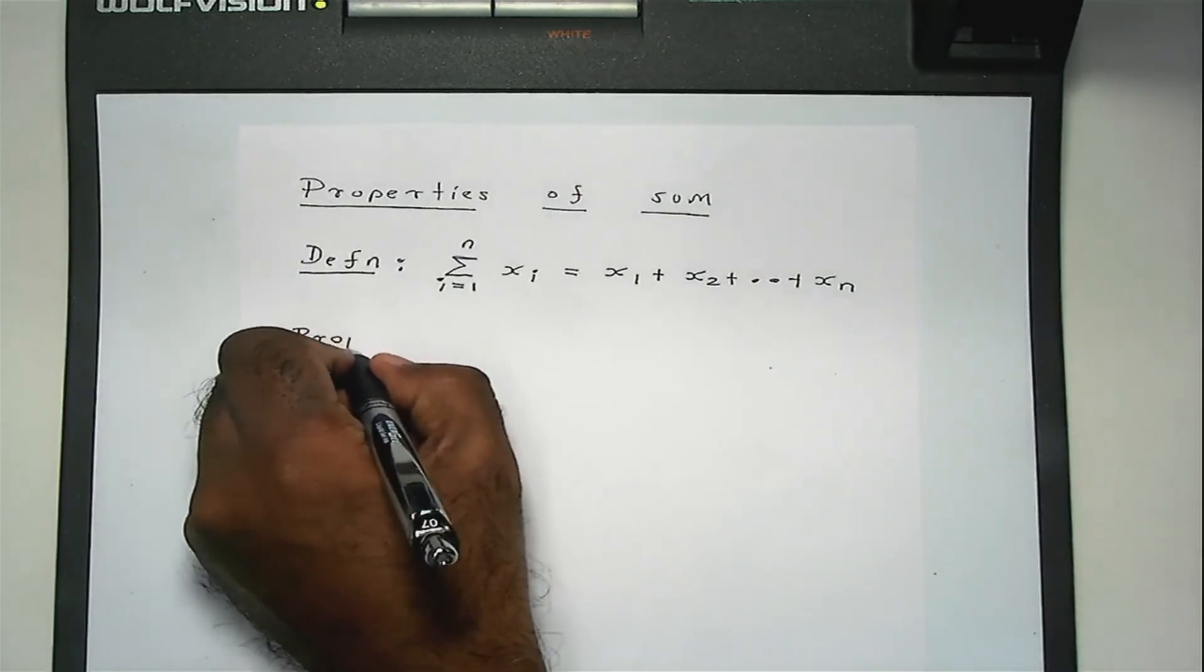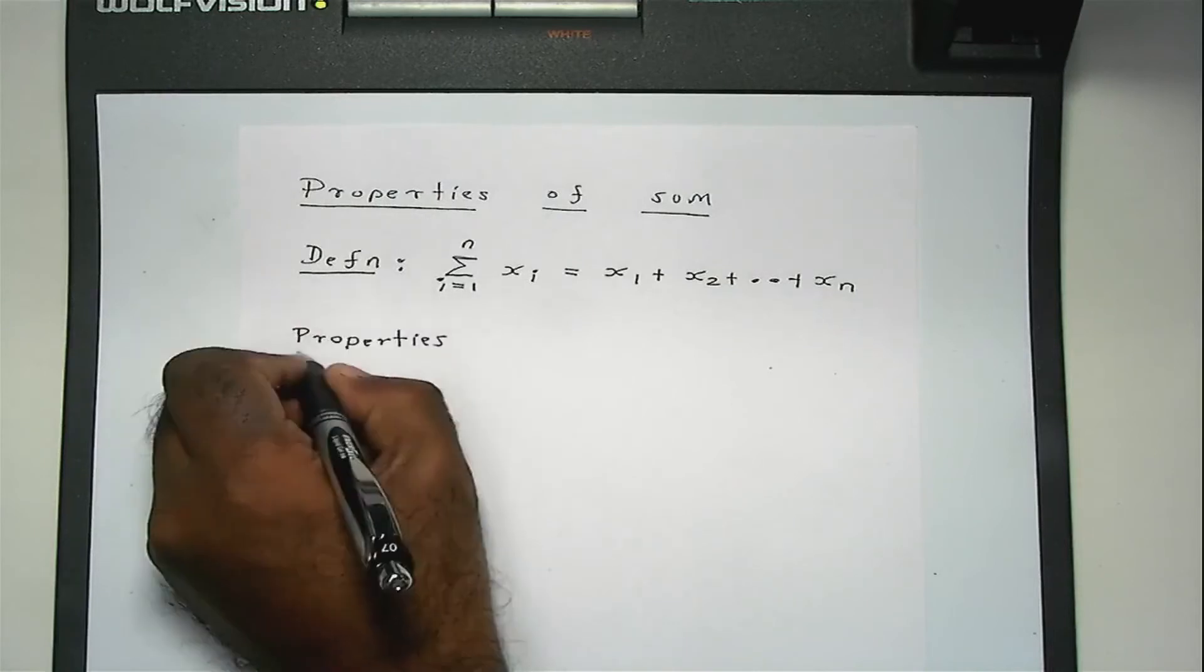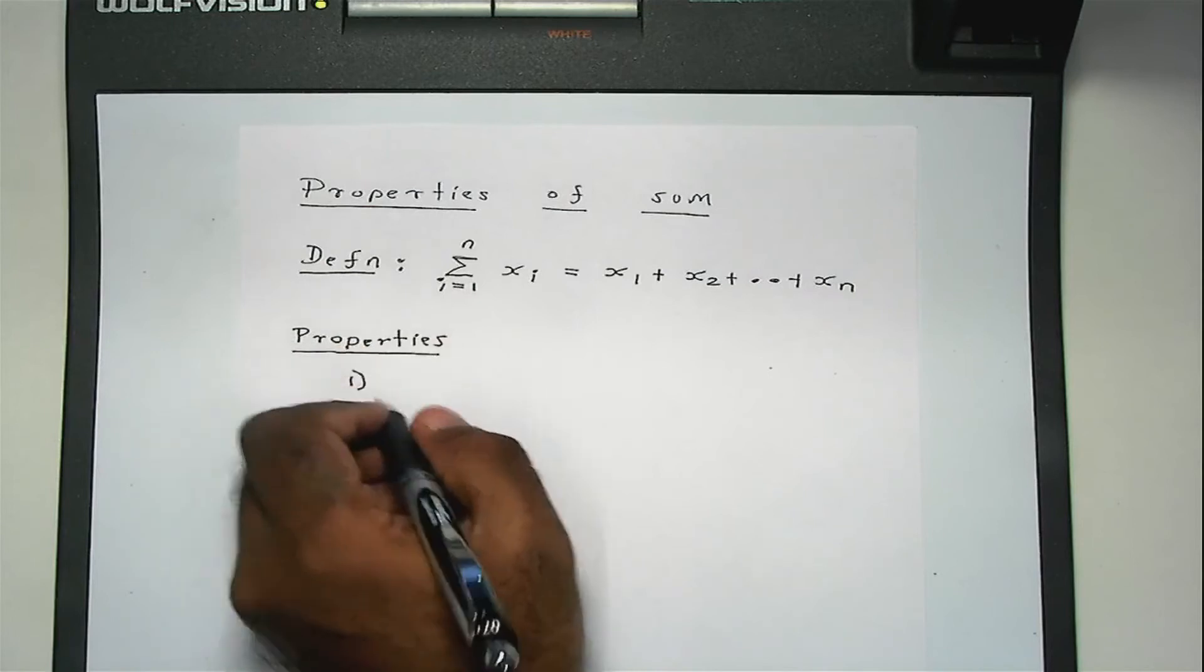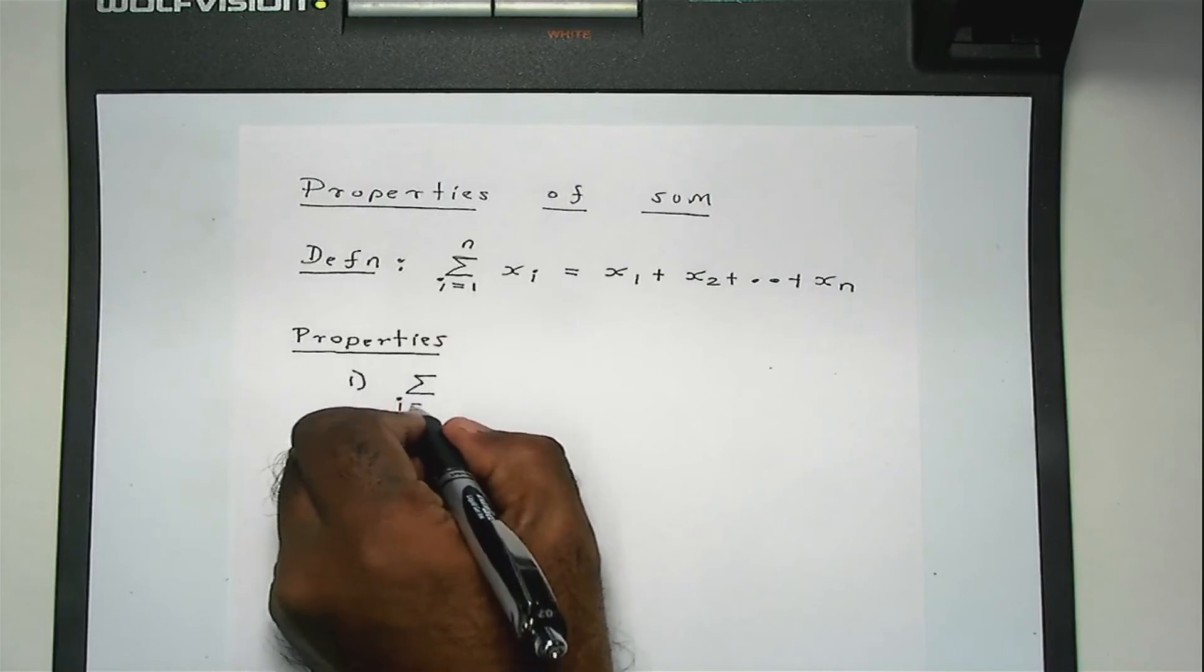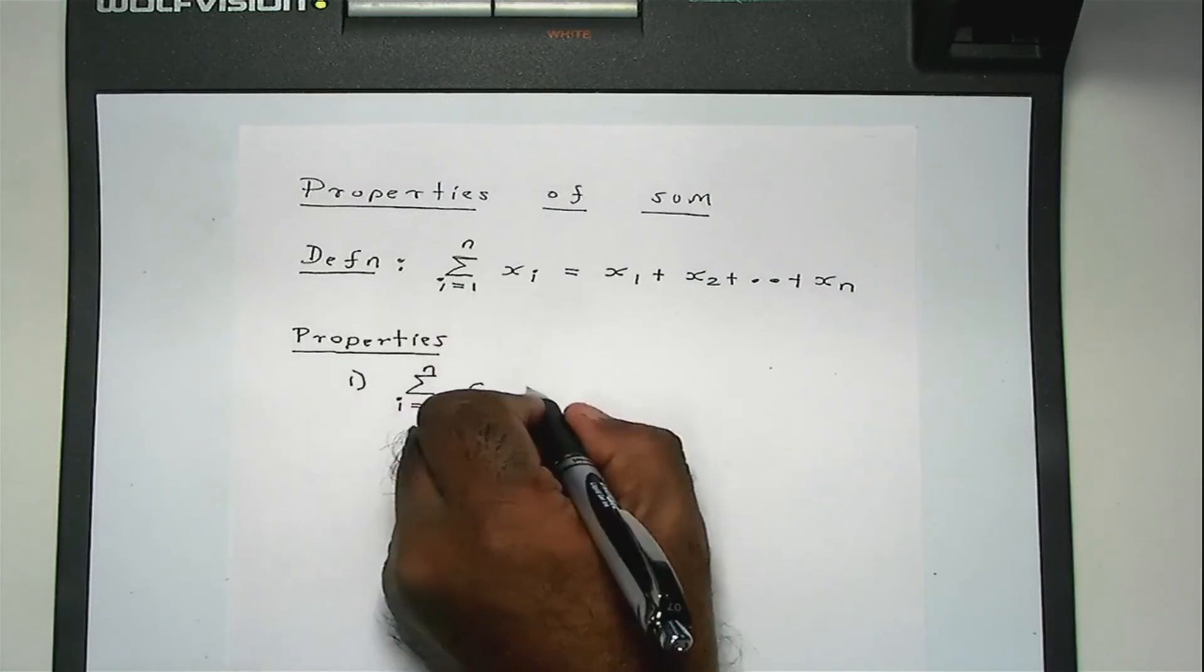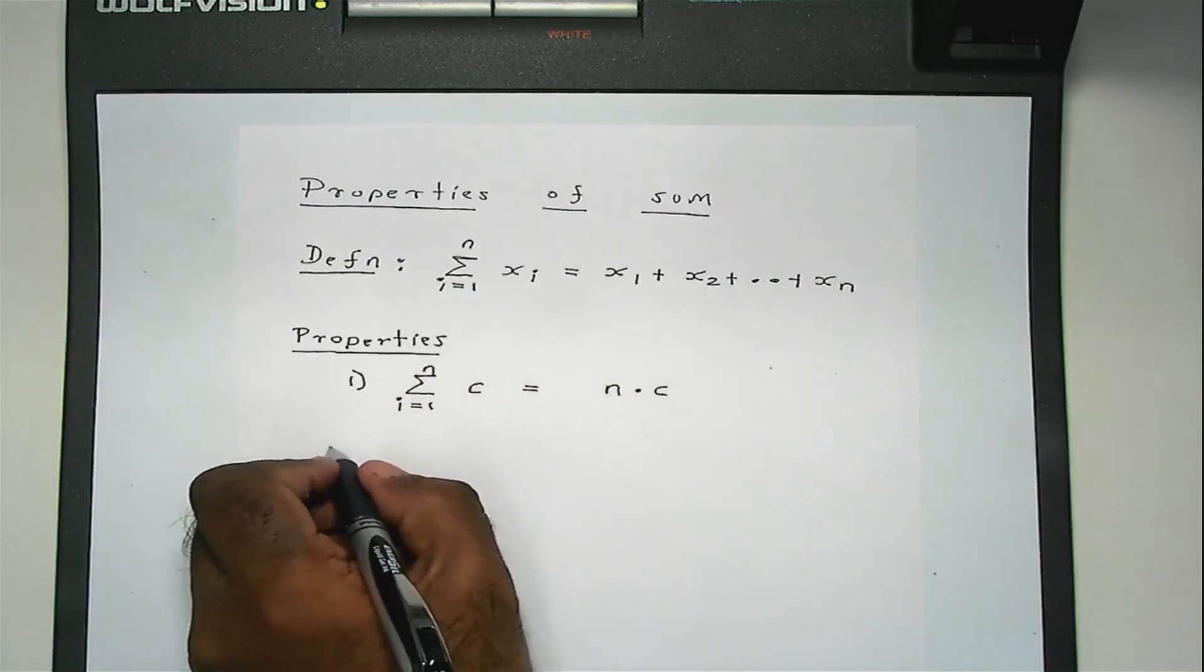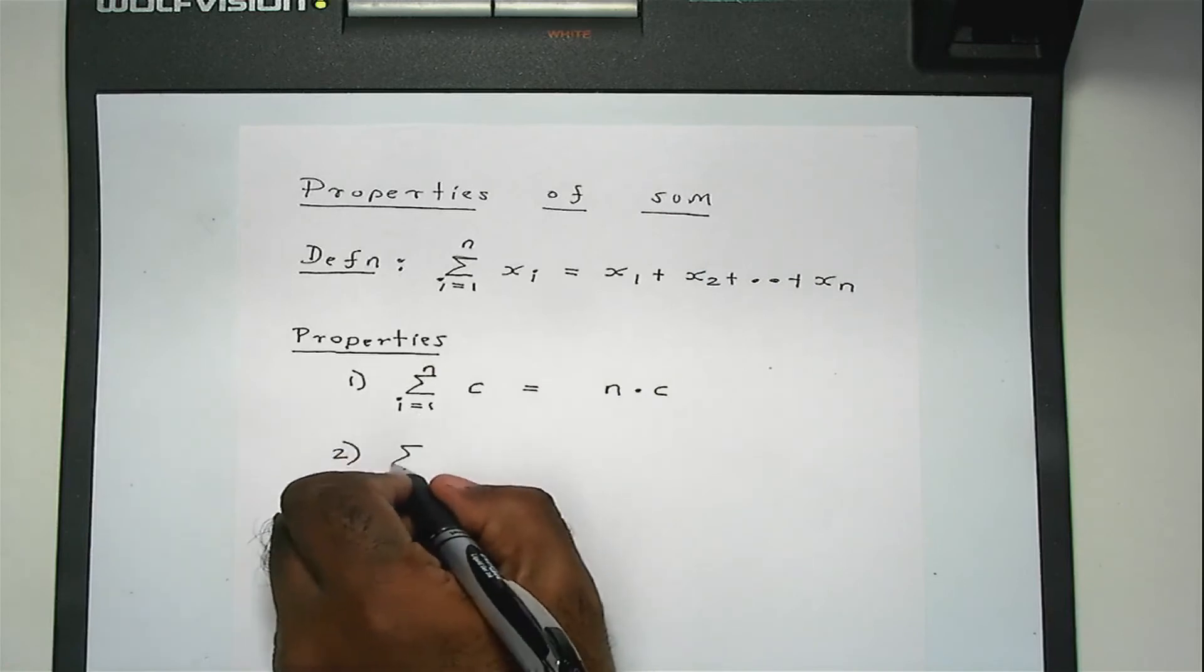You may or may not know this, but I will write them down. One is that if you have sum I from 1 to n of a constant C, then that is equal to n times the constant.